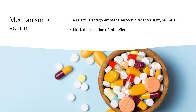Mechanism of action: Ondansetron is a selective antagonist of the serotonin receptor subtype 5-HT3. Ondansetron may block the initiation of the vomiting reflex. Activation of vagal afferents may also cause a central release of serotonin from the chemoreceptor trigger zone of the area postrema, located on the floor of the fourth ventricle. Thus, the antiemetic effect of ondansetron is probably due to the selective antagonism of 5-HT3 receptors on neurons located in either the peripheral or central nervous systems, or both.